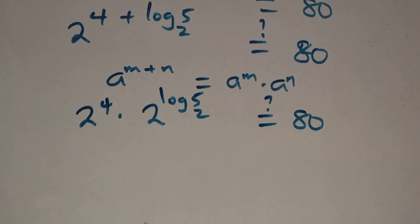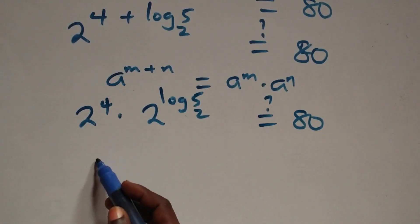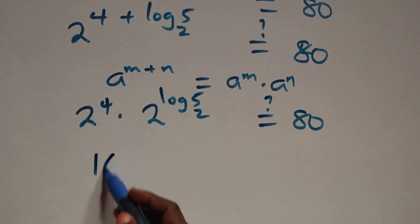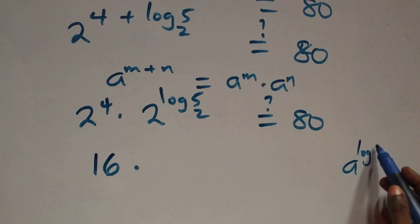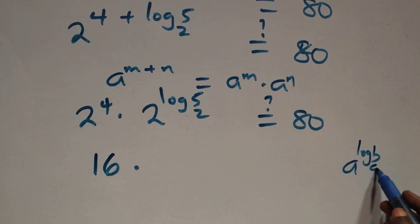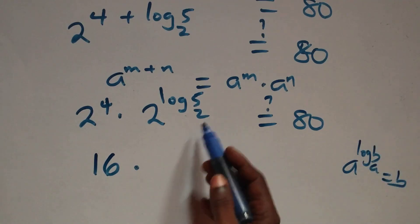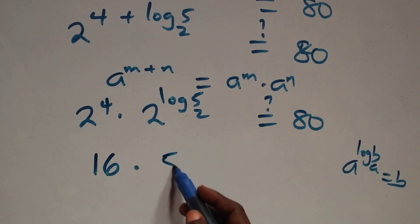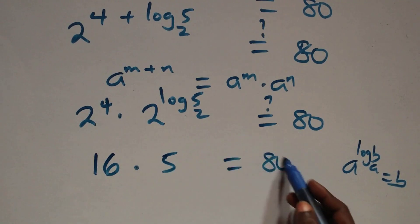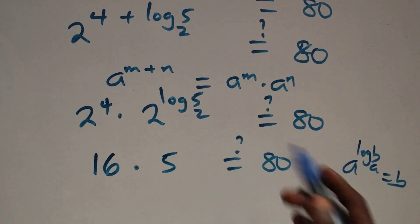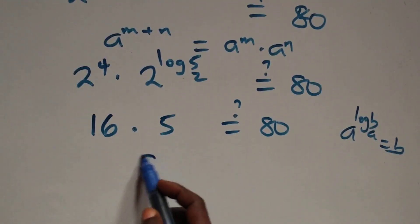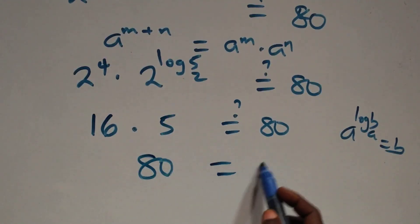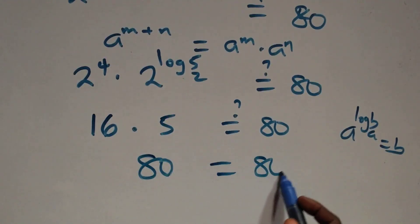2 raised to the power 4 multiplied by itself 4 times gives 16. Then we have a^(log base a of b) = b, so 2^(log₂5) = 5. Therefore 16 times 5 equals 80, which equals 80 on the right-hand side.